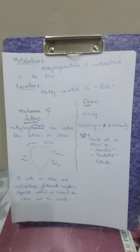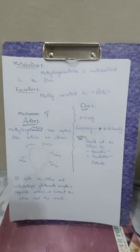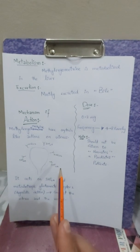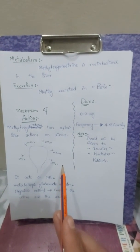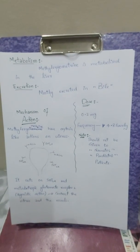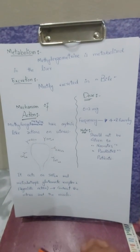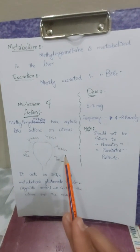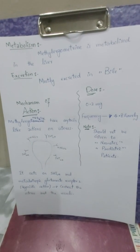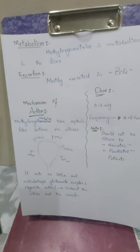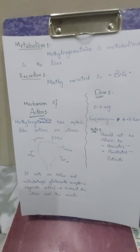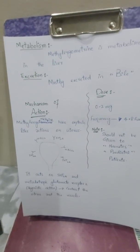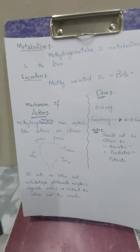About the mechanism of action, methylergometrine has oxytocin-like actions on the uterus. On the uterus we have two types of receptors: 5-HT2A serotonin receptors and metabotropic glutamate 2 receptors. This drug acts on these receptors and causes contraction of the uterus, but should not be used during pregnancy, abortion, or during induction of labor.